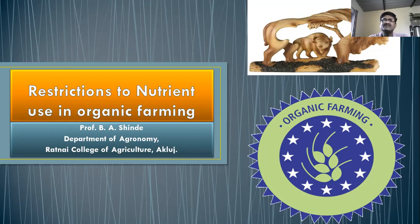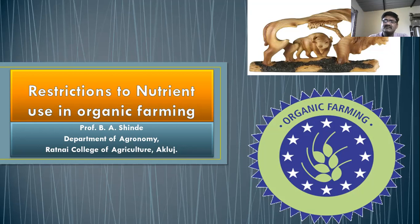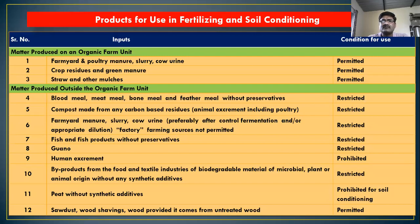Any type of amendment which is usually prohibited in the organic farming system — for example, any type of chemical is completely prohibited. Also, products which are prepared synthetically are restricted inputs in the organic farming system. So we see products that are permitted, restricted, or prohibited.